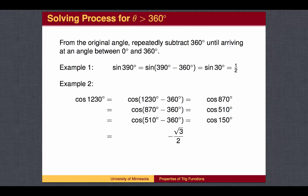In example 2, we subtract a full circle from 1230 to get 870, another full circle to get 510, yet one more full circle to get 150, whose cosine value we can look up on the unit circle.